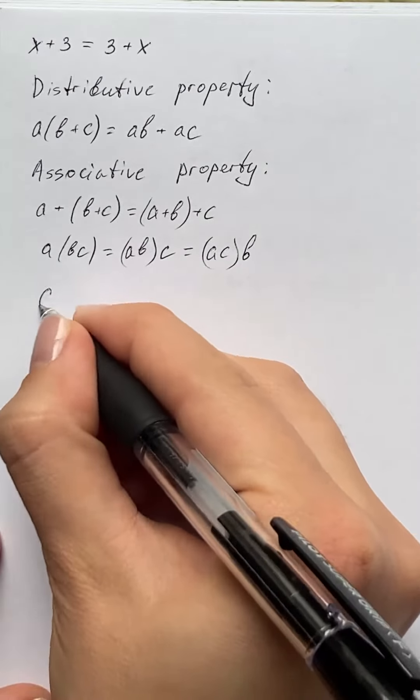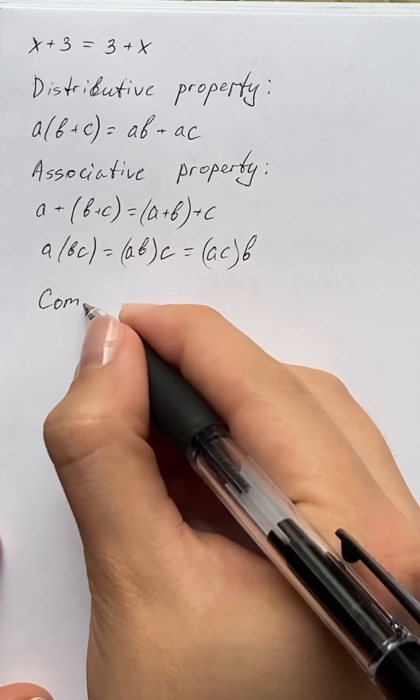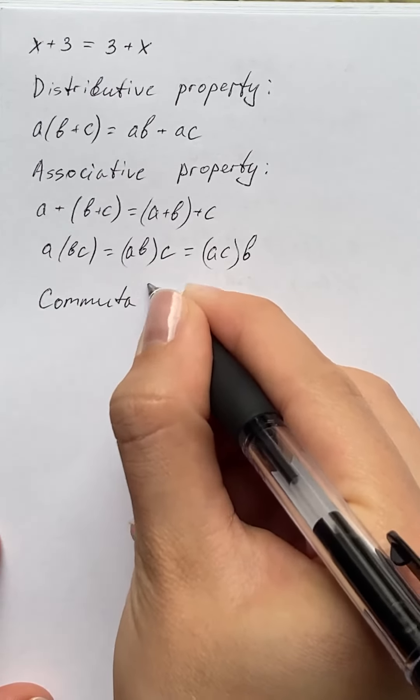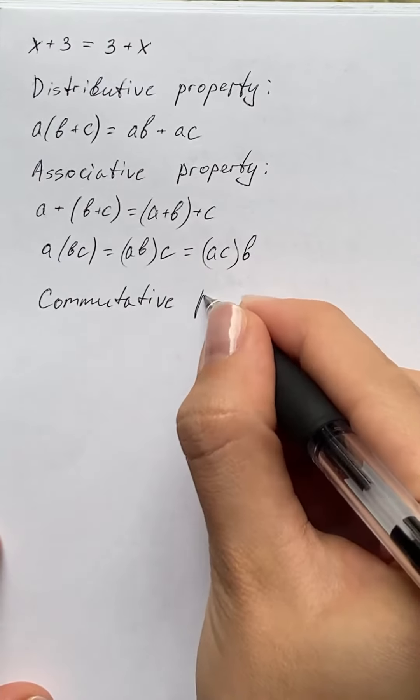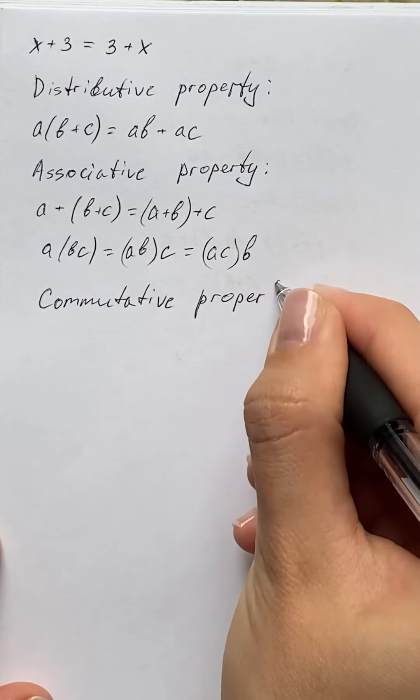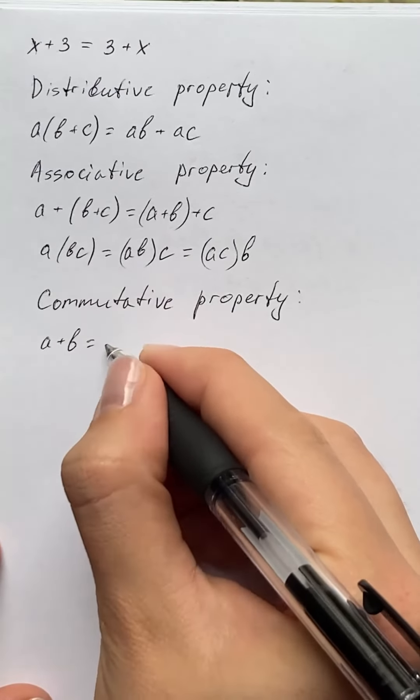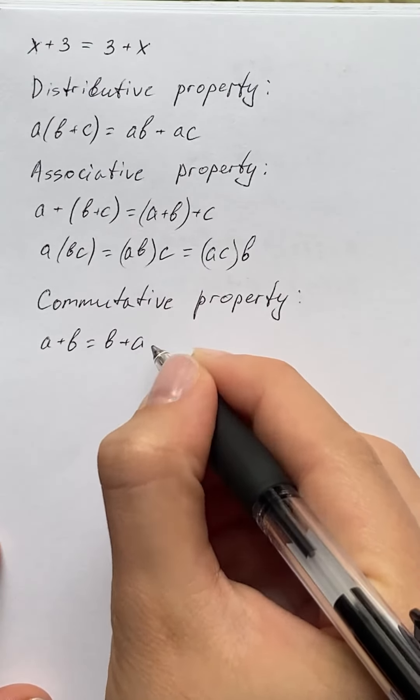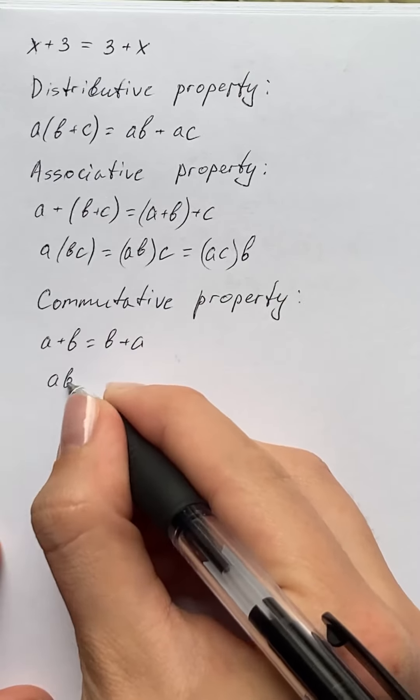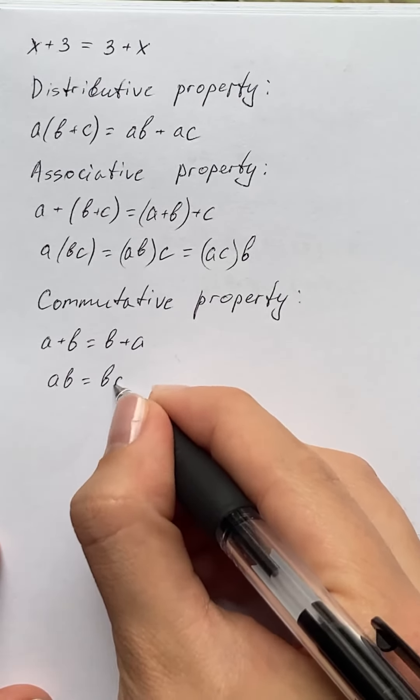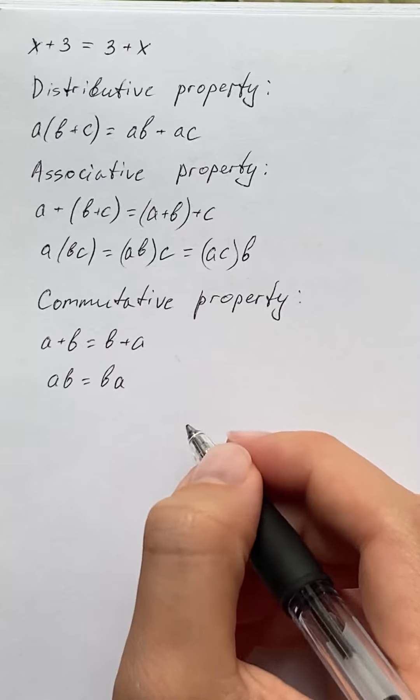The last one is the commutative property. That's a + b = b + a, or ab = ba, so the order doesn't matter.